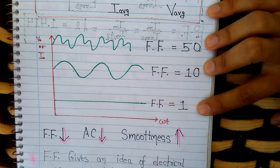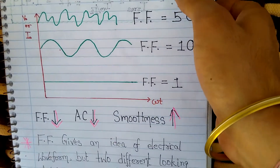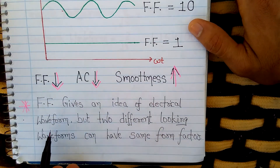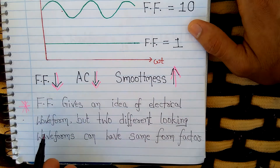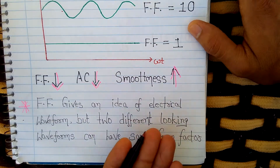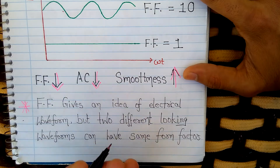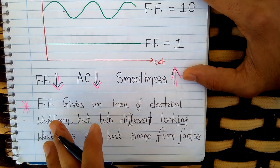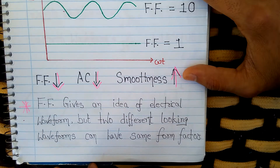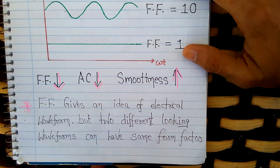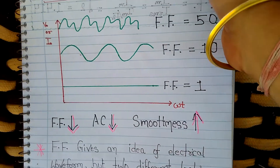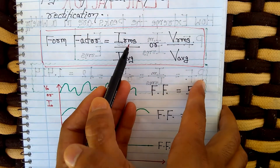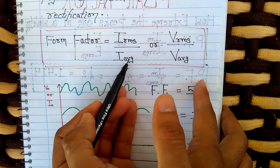Form factor gives you an idea of the electrical waveform, but two different-looking waveforms can have the same form factor. If there is some form factor value, say five, then multiple kinds of waveforms can have similar form factor — it depends on the amount of ripples. Mathematically, form factor is calculated as the ratio of RMS value to the average value, be it current or voltage.